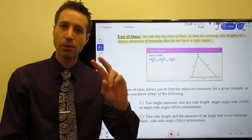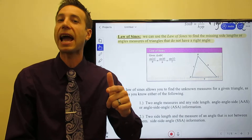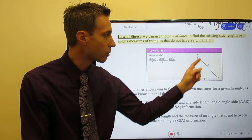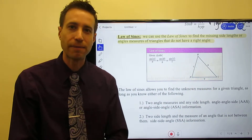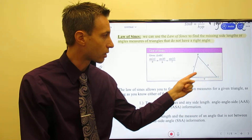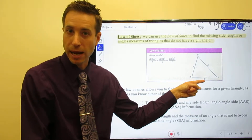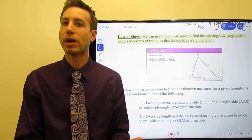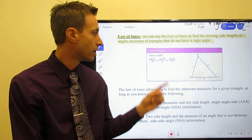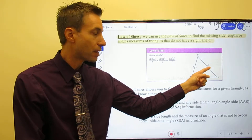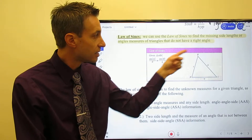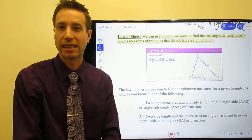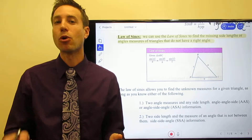The Law of Sines is pretty straightforward. You set up a ratio of the sine of an angle divided by the length of the opposite side. From the diagram: there's angle A, angle B, and angle C, and across from each angle is its corresponding side. So angle A is across from side a, angle B across from side b, and angle C across from side c. The Law of Sines states: sin A / a = sin B / b = sin C / c.